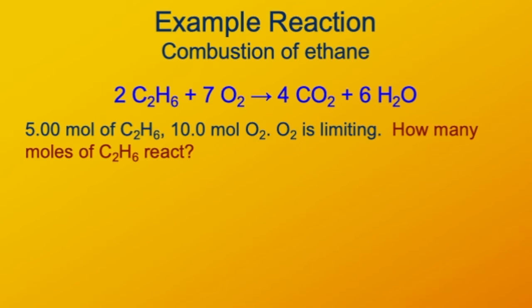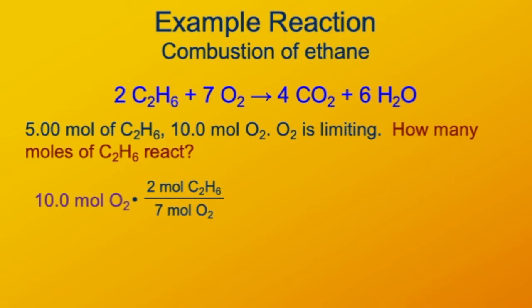Using those same numbers — 5 moles of ethane and 10 moles of oxygen — we know that oxygen is limiting. So how many moles of C₂H₆ are going to react? Since oxygen is limiting, we start with oxygen to find the proportions of everything else. Starting with 10 moles of oxygen, there are 2 moles of ethane for every 7 moles of oxygen. That gives us 2.86 moles of ethane that are going to react — only a little more than half of the 5 moles that were there to begin with.